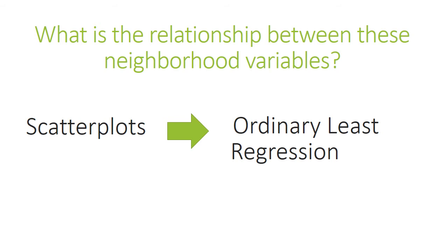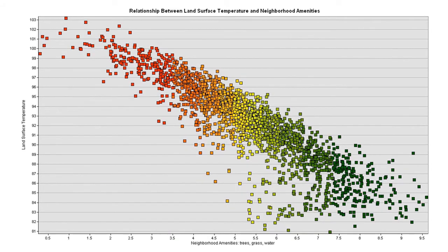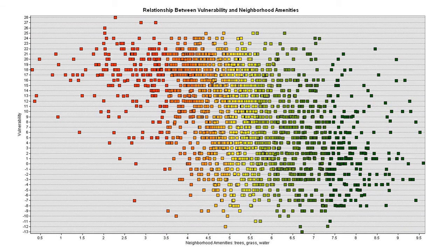Now it's time to look more in depth into the relationship between the three neighborhood characteristics. To evaluate these relationships, I created scatter plots and then ran an ordinary least squares regression. First, there is a positive correlation between land surface temperature and vulnerability — the hotter the neighborhood, the more demographically vulnerable it is. Next, there is a strong negative relationship between land surface temperature and neighborhood nature amenities — the hotter the neighborhood, the less prevalence of nature amenities. Lastly, there is a slightly negative relationship between vulnerability and neighborhood amenities — the more vulnerable the neighborhood, the lower the prevalence of nature amenities.